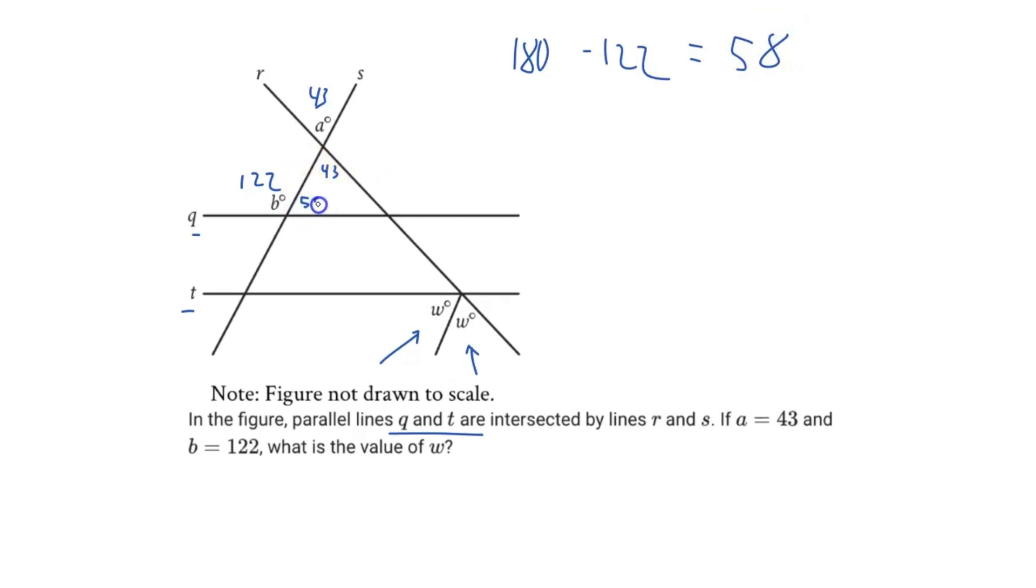And we can see here that there is a little triangle made right here. Because of that, we know two angles, so we can find the missing angle. There's 180 degrees in a triangle. So 180 minus 43 minus 58 will give us a value of 79 degrees.